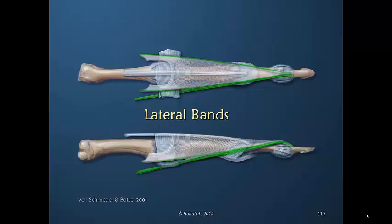The lateral bands are highlighted here in green. It's worth noting that on the radial aspect — remember this is the left ring finger — there is the insertion of the lumbrical muscle, a linear insertion. It's a very small tendon moving up and becoming part of the lateral band. In addition, on the radial side is a portion of the broader interosseous insertion that also contributes to the lateral band, in addition to sharing its insertion with the oblique and transverse fibers.